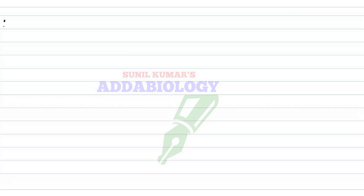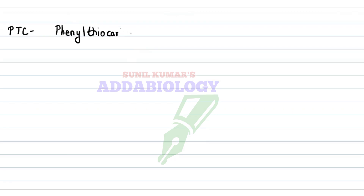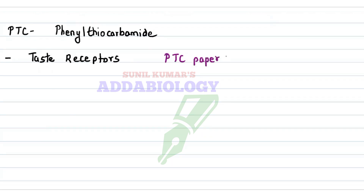Hello friends, I am Sunil sir and I am back with a new video. In this video we are going to discuss about PTC tasting, one of the genetic disorders, on which we get a pedigree chart. PTC stands for phenyl thiocarbamide; it is one of the chemicals that helps to know whether our taste receptors are active or not. PTC paper is used to explore genetics.